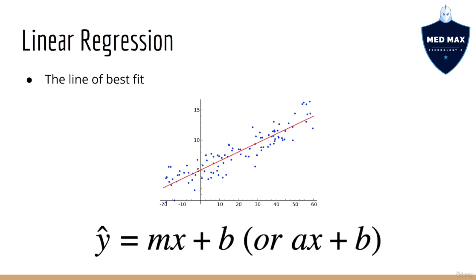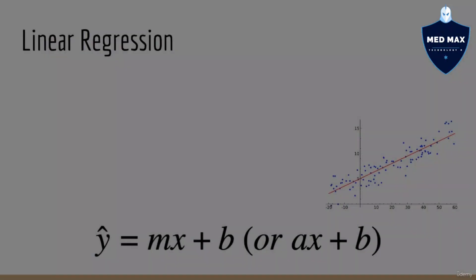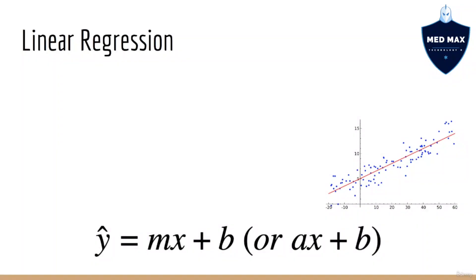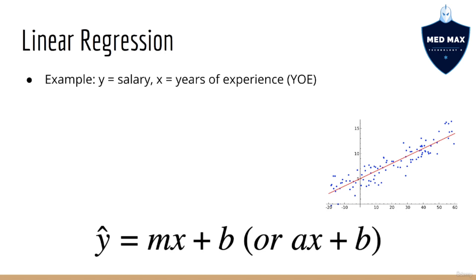Our job, of course, is to find a line that best fits our input data. To give you a simple example of how we would use linear regression, let's suppose we are trying to predict your salary based on how many years of experience you have. So in this case, x would be the number of years of experience, and y would be your salary. Now you might be wondering what is the interpretation of the slope and y-intercept in this scenario.